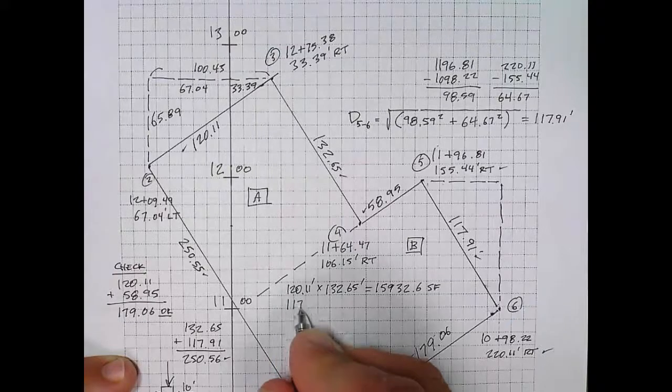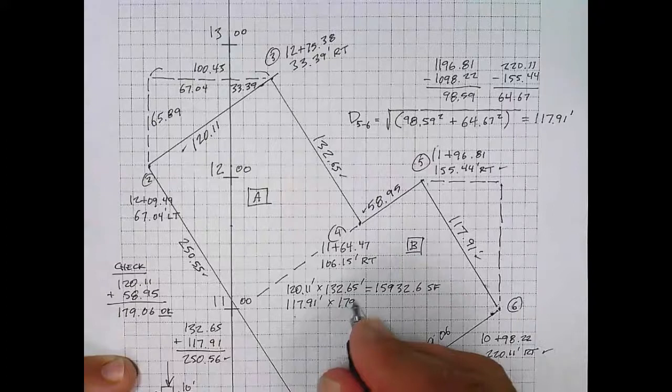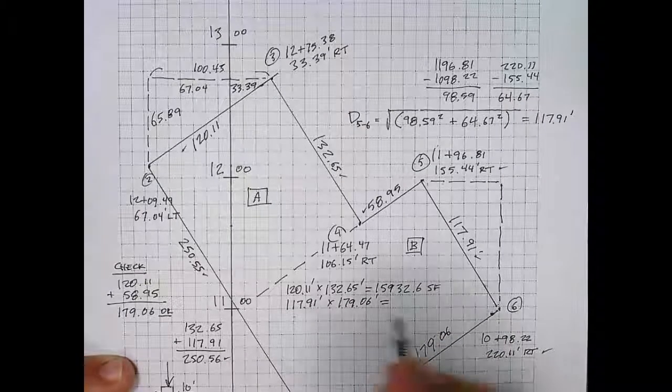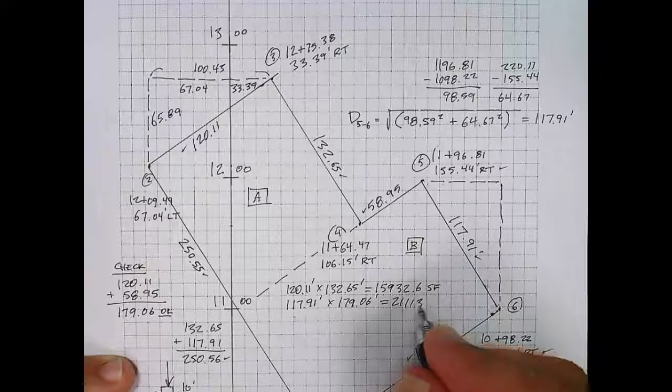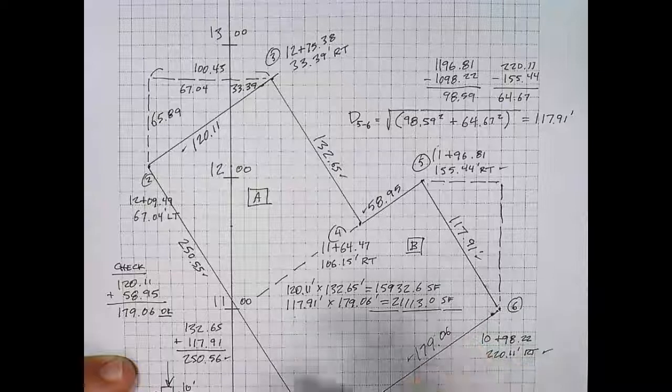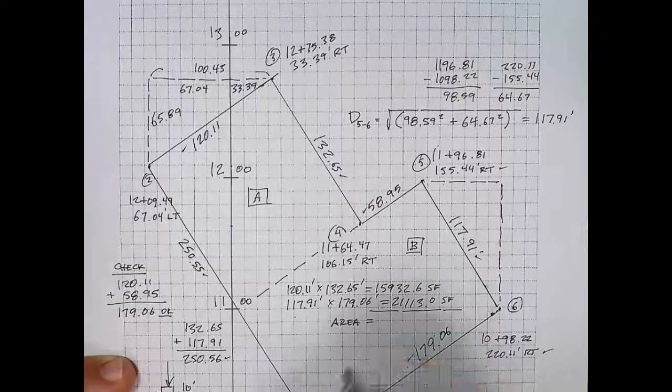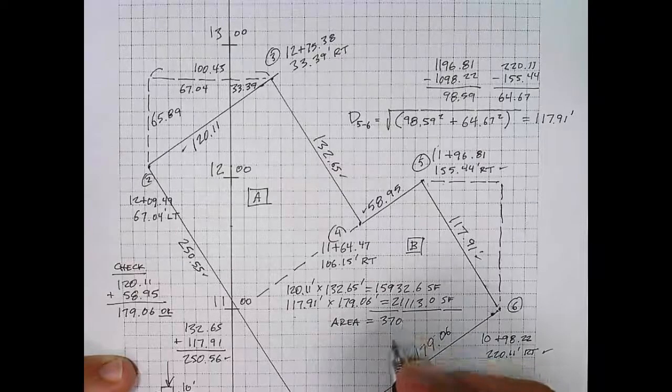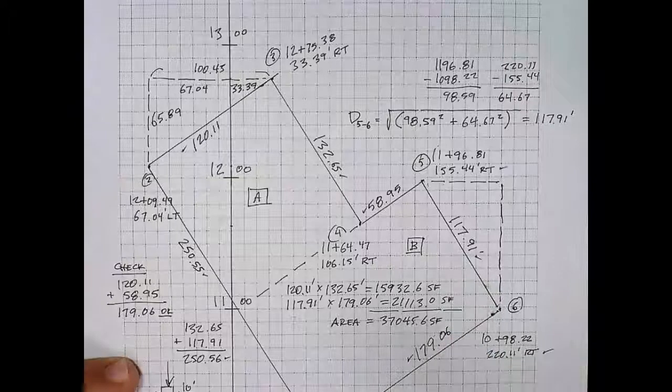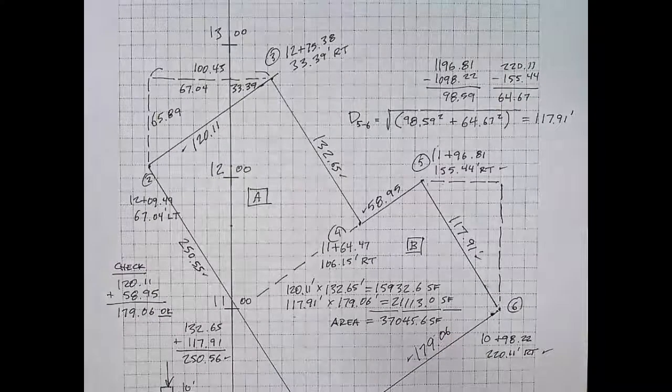Now let's simply find the area for area B. It's the dimensions 117.91 by 179.06, and the product of those is 21,113.0 square feet. Now all I need to do is sum those two parts, and I get the area of this building footprint is 37,045.6 square feet. We were able to get all of this information using station and offset.